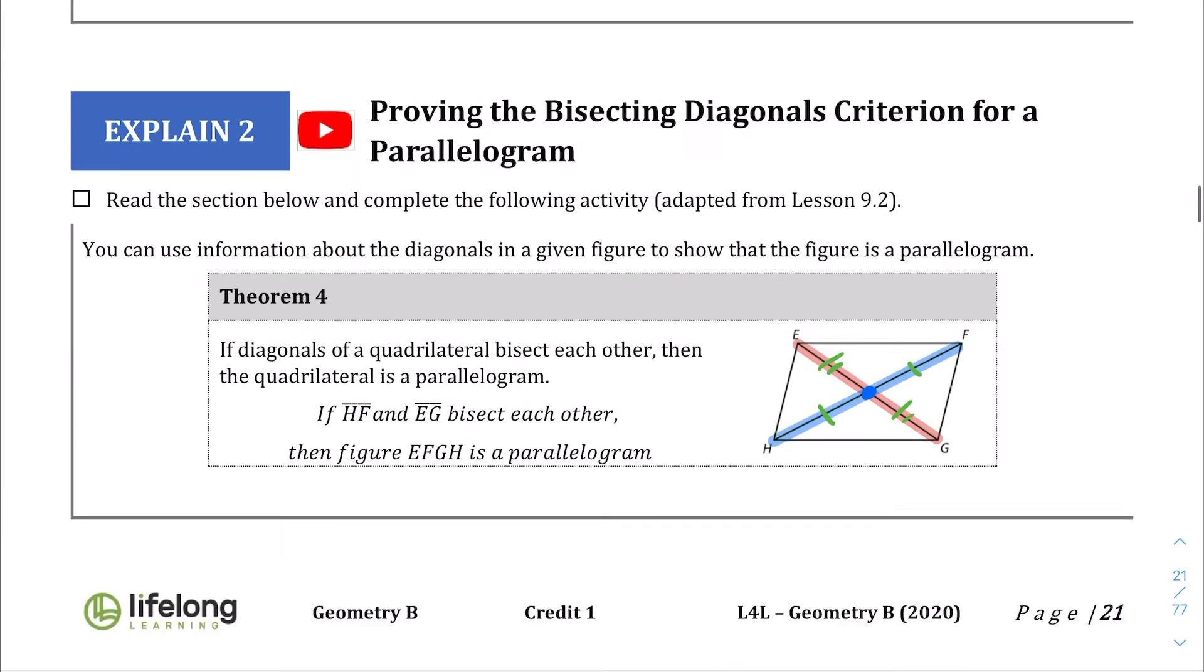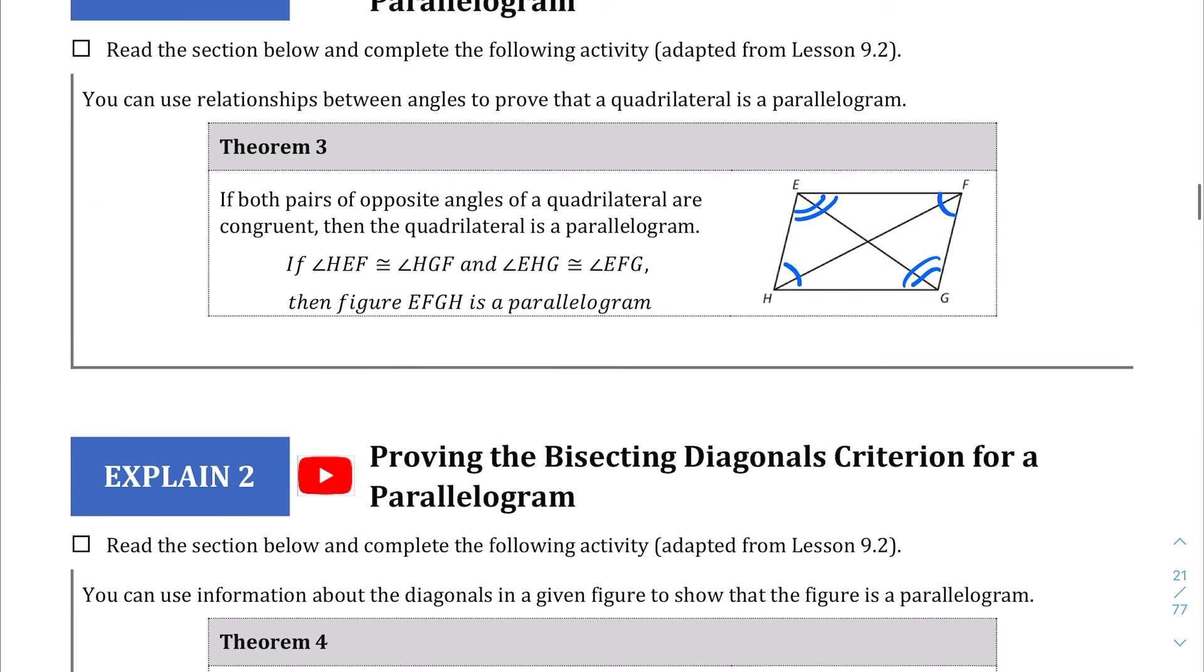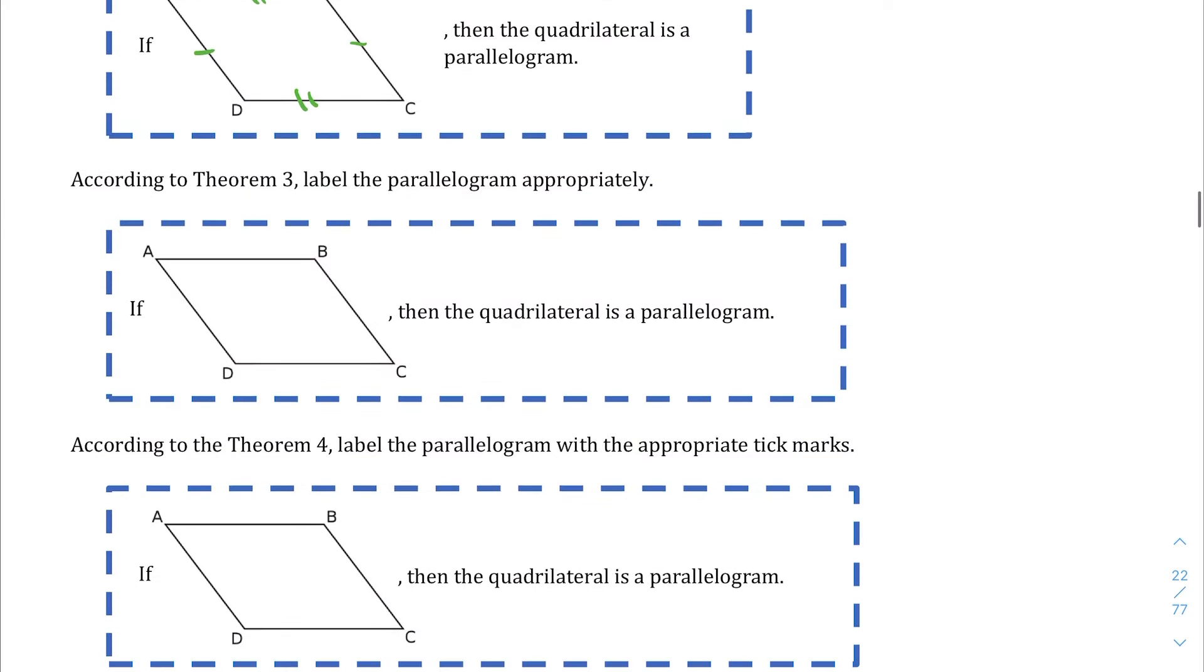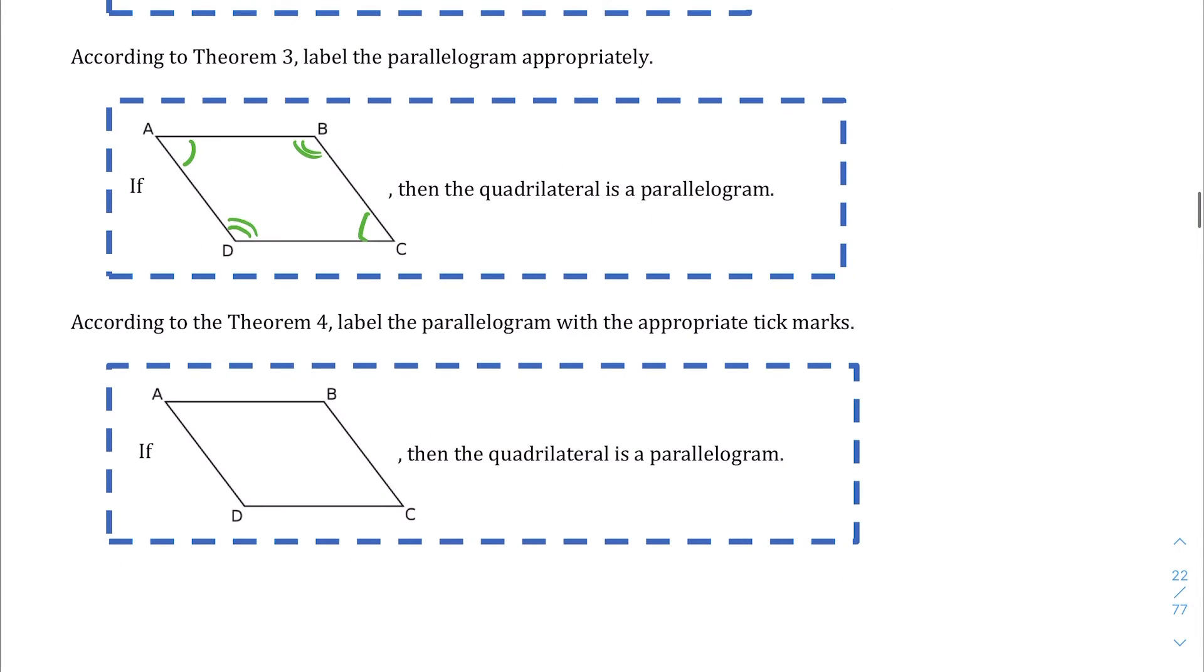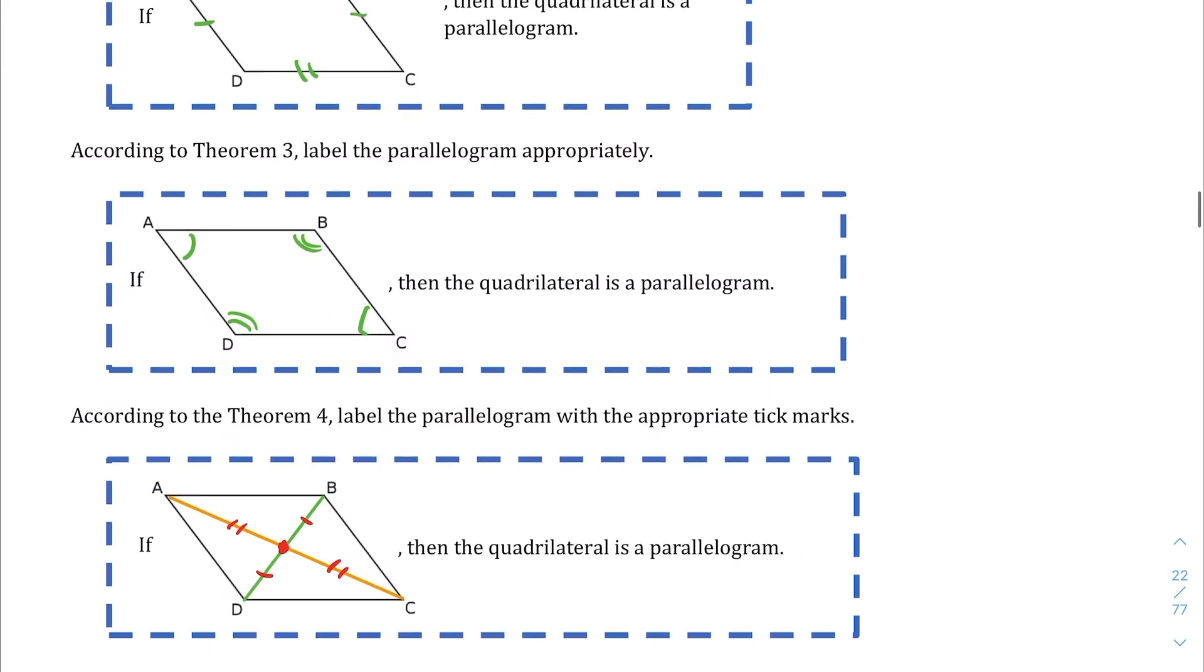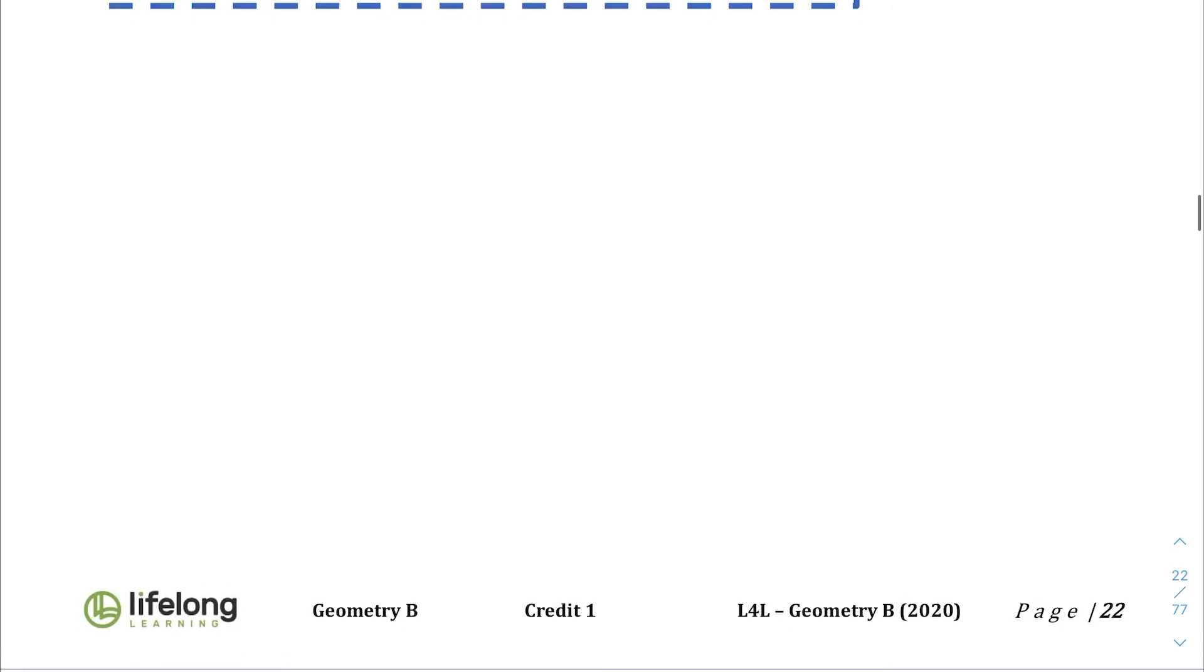Theorem 3 said that if both pairs of opposite angles are congruent, meaning this is congruent to this and this is congruent to its opposite, then you have a parallelogram. And lastly, theorem 4 said that if the diagonals bisect each other, so this bisects this at this point right here and it makes equal side lengths, or equal segments, then it's a parallelogram. Now I don't know why they didn't cover theorem 1, but they covered the last 3.